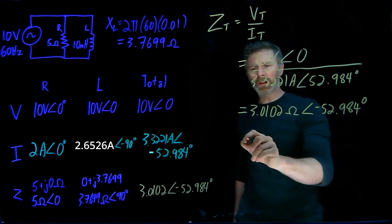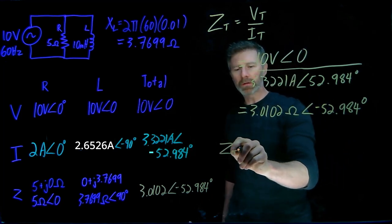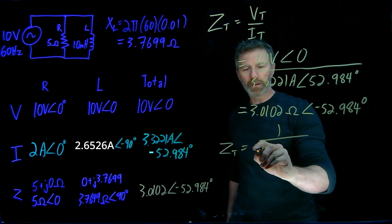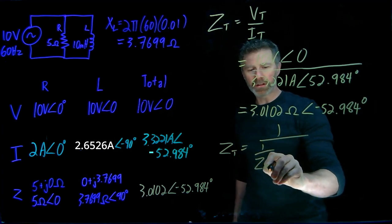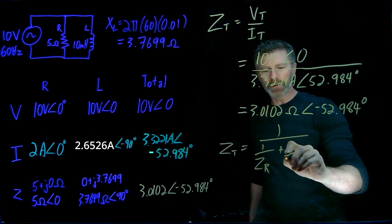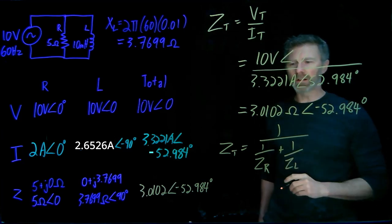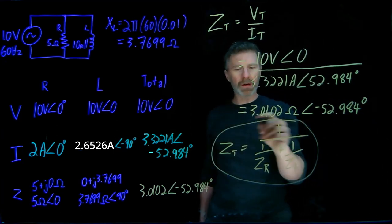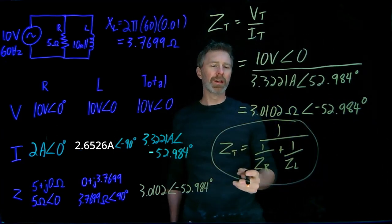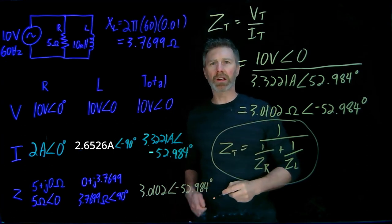Of course, I could also have figured out the total impedance by going one over the sum of one over the impedance of the resistor plus one over the impedance of the inductor. There are a few more steps of arithmetic involved, but it will give me the same answer as I got right there.